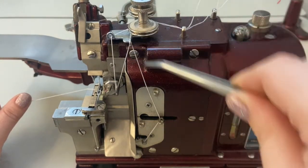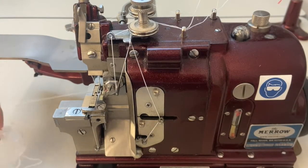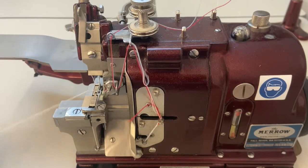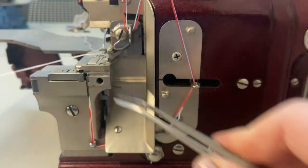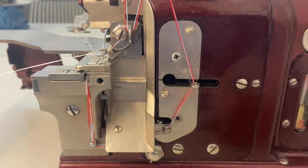Continue threading through a series of stationary and active thread guides on the face of the machine. Next, the thread travels under the plate which catches the blade trimmings, through another stationary thread guide, and then straight upwards until it reaches a small channel and tunnel.